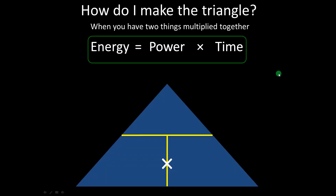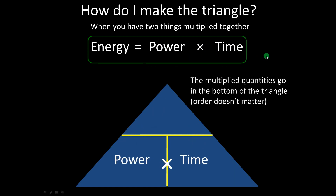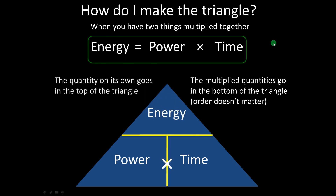So how do you make the triangles? You look at your equation and identify which type it is. If it's a multiply equation, the two quantities that are multiplied together go into the bottom of the triangle, and the remaining quantity which is on its own goes into the top. It doesn't matter which order you have the two things in the bottom — they can be either way around.